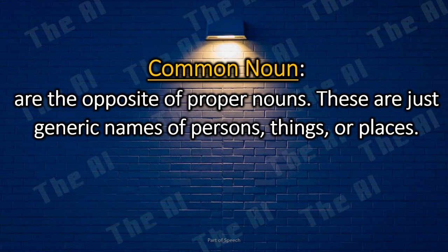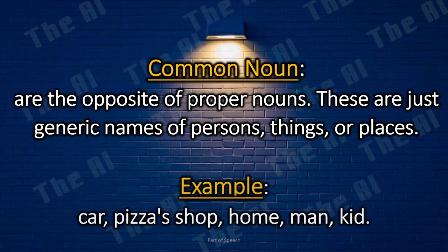Common nouns are the opposite of proper nouns. These are just generic names of persons, things, or places. Examples: car, pizza shop, home, man, kid.